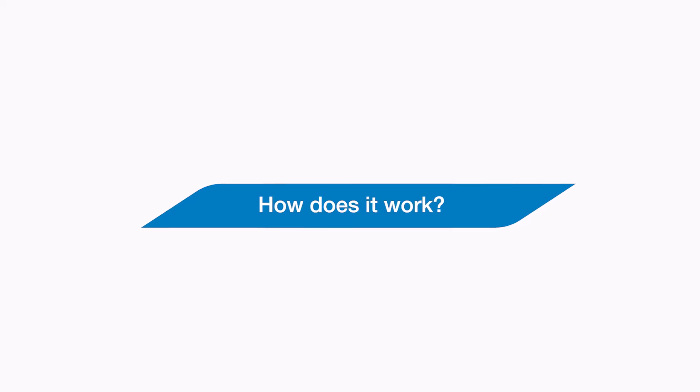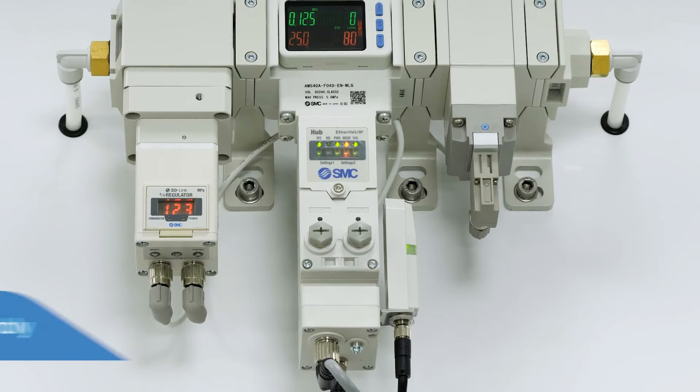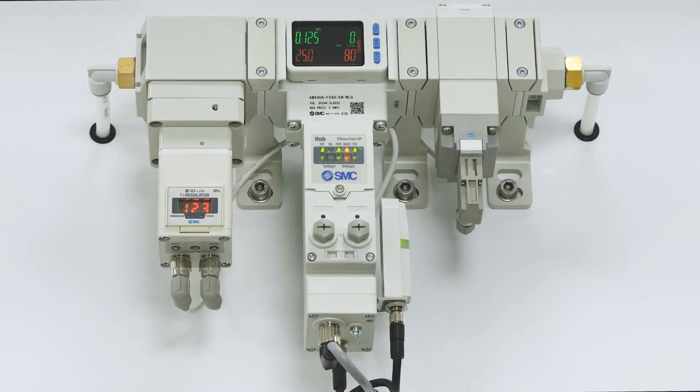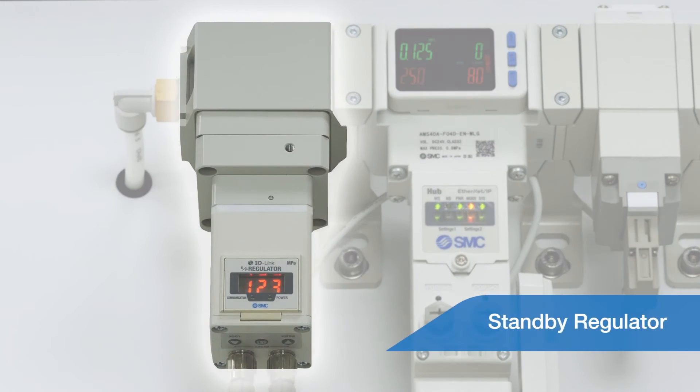So how does it work? Here we have a typical air management system assembly which is made up of three main components. The first component is the standby regulator, which can be a manual or electropneumatic type. In this instance, we can see the electropneumatic type. Either option can be used to control the machine supply pressure.